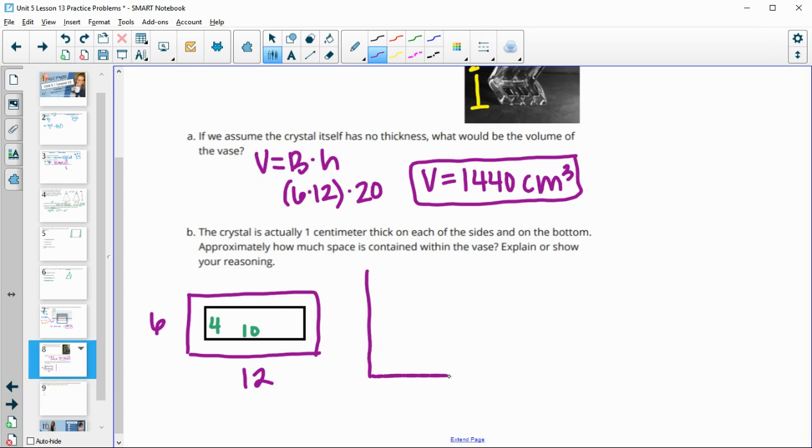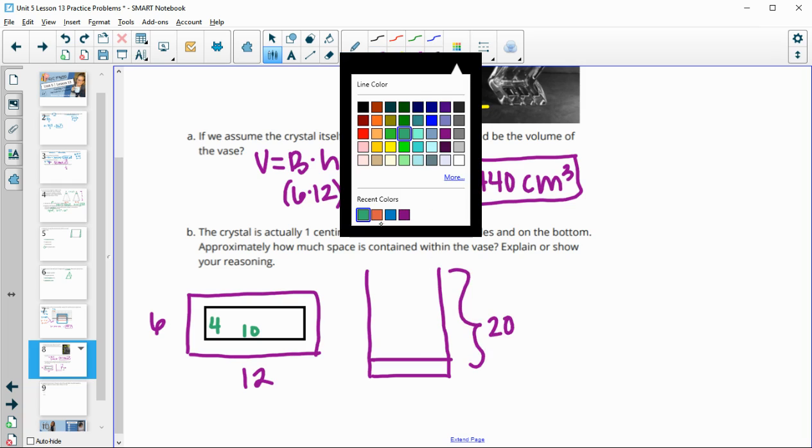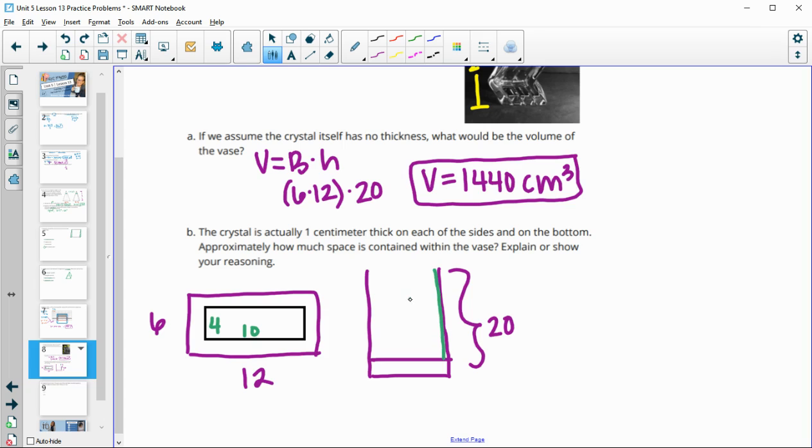Then this also happens on the base of the vase. So if we make a simple drawing of this vase, the base is also taken in one centimeter or has a thickness of one centimeter. So this originally was twenty. This part in here then is going to be nineteen because we're up one centimeter from the base. So then we'll calculate our new volume. Again, area of the base times the height. But now our base dimensions are four and ten, and then our height is nineteen. So the volume now, if we take into consideration the thickness of the glass, would only be 760 centimeters cubed.